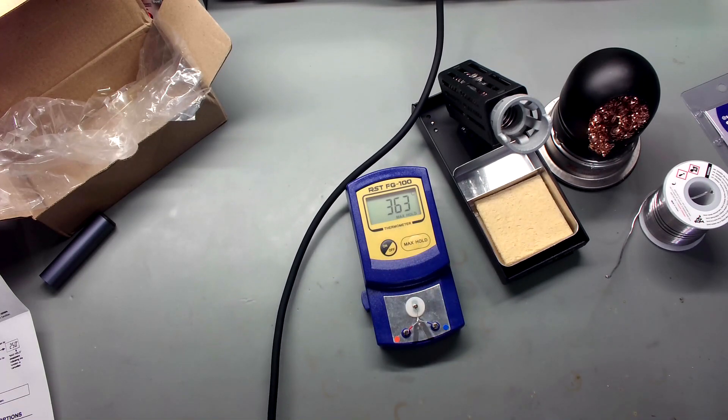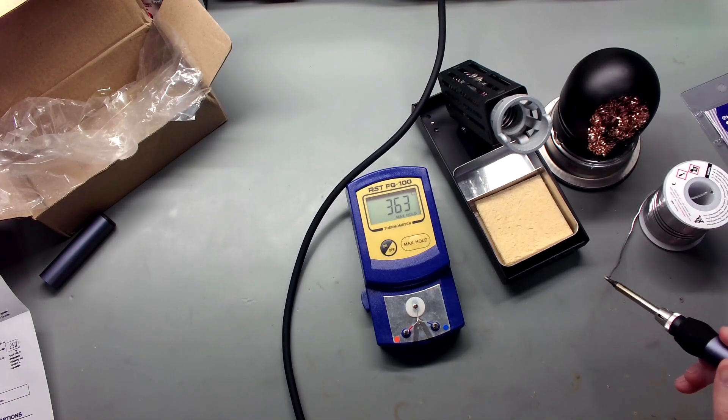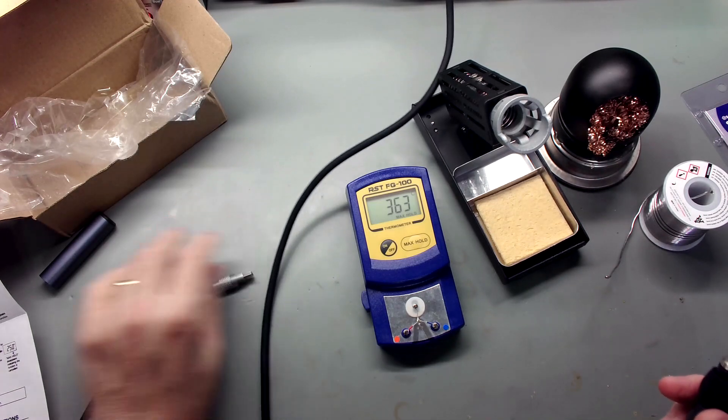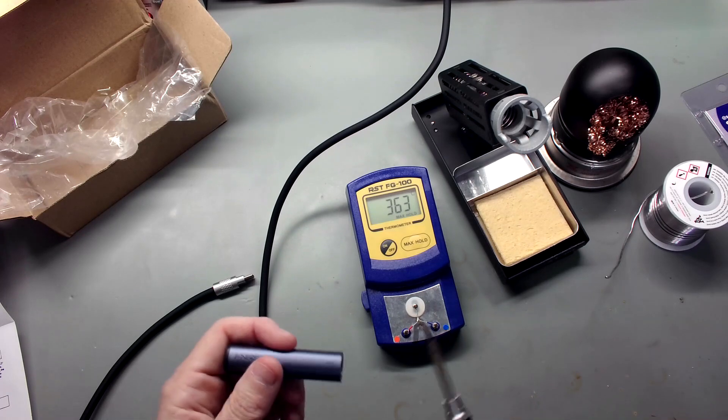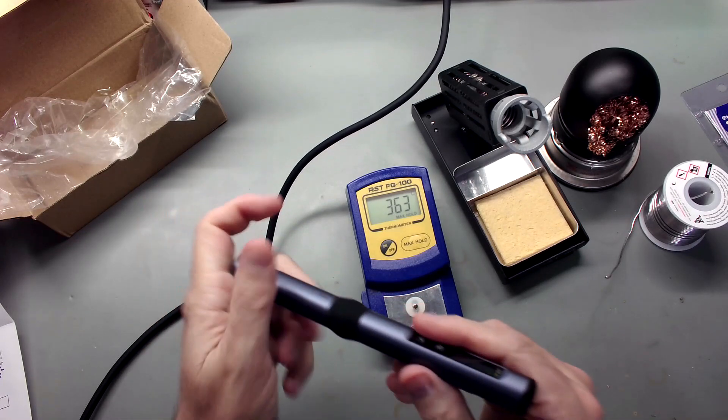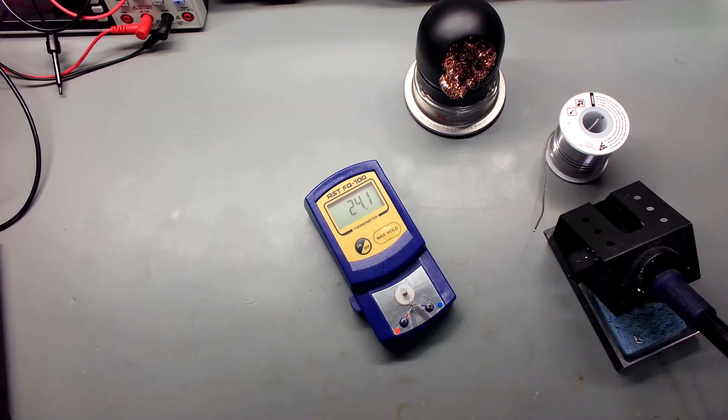So, let's go ahead and let's turn this iron off. I'm going to clean it first. Clean the tip. Put a little solder on it. Unplug it. Put the top. And, we'll put it away.